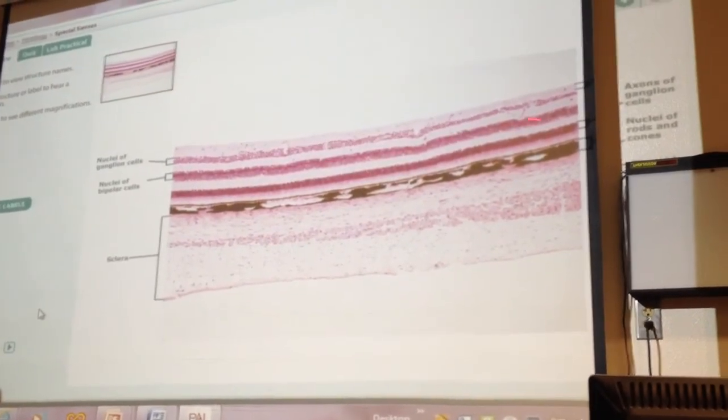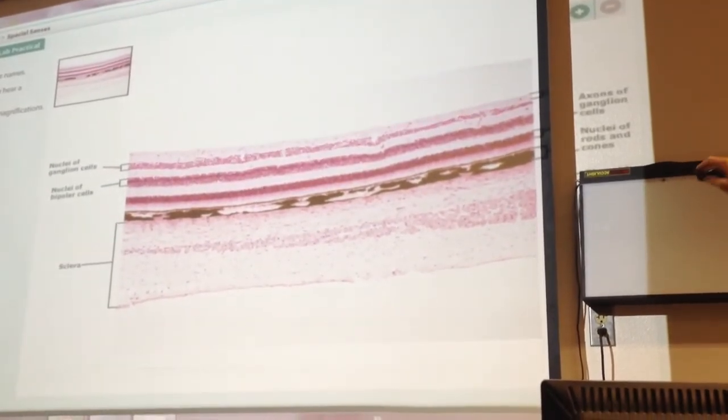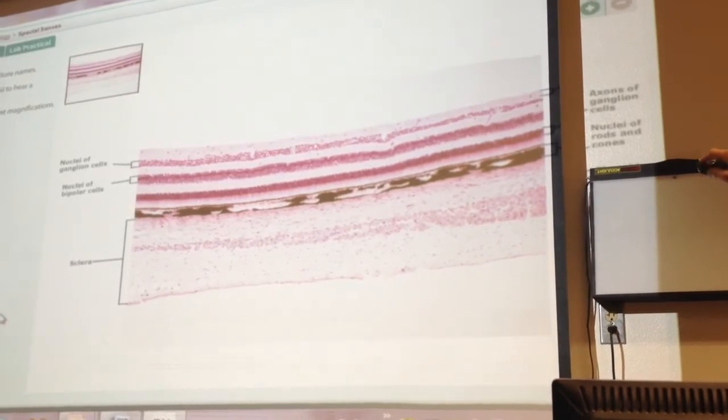The bipolar are going to be the middle layer of nuclei. And then the ganglion layer of nuclei, it can be pretty sparse. I've seen it look quite a bit more sparse than that. But that one's going to be the inside.